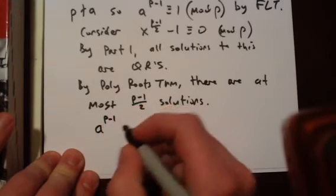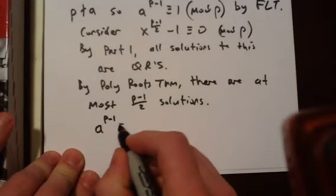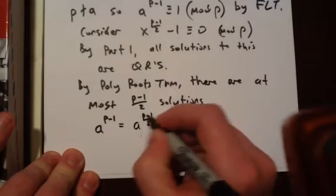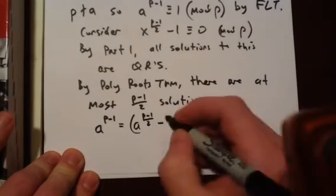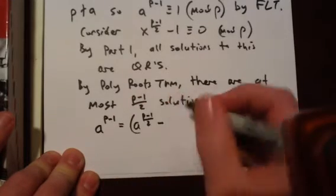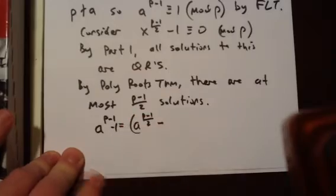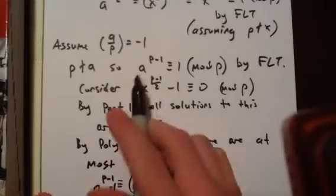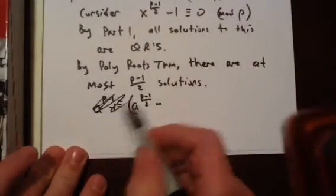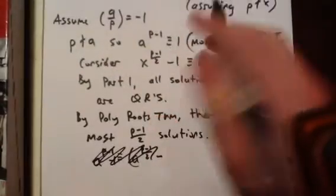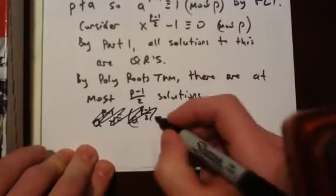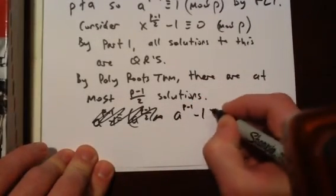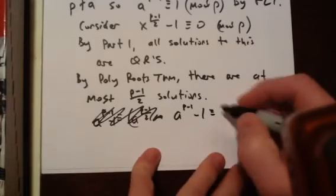A to the P minus 1 is equal to A to the P minus 1 over 2. Oh, sorry. This should be a minus 1 here. A to the P minus 1 minus 1 is congruent to 0. We have that from this. Let me rewrite that so it's a little bit more clear. So we're going to subtract 1 from both sides of this. So A to the P minus 1 minus 1 is congruent to 0, but we're going to factor this.